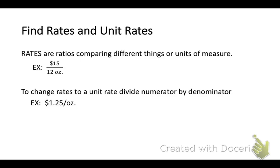Rates are ratios comparing different things or units of measure. For example, $15 per 12 ounces. You'll see this a lot at a store, particularly at a grocery store. We like to think of things in terms of unit rates, which means divide it down to one, in this case one ounce. If you take 15 and divide it by 12, you will get 1.25. That means whatever this product is, it is $1.25 per ounce. To find that, you simply take your numerator, 15, and divide it by your denominator, which is 12.